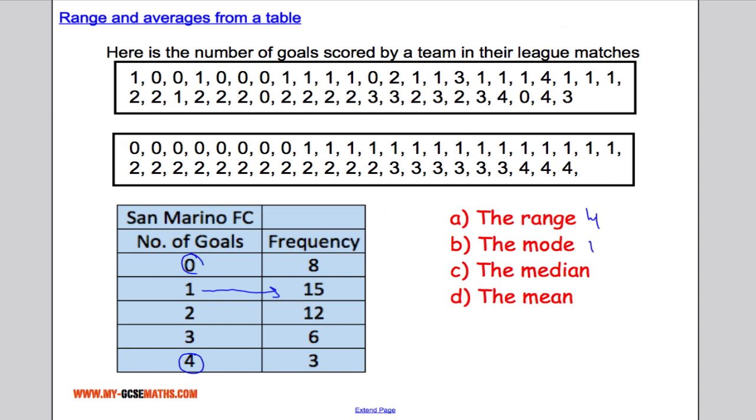The median is going to be the middle data point. Now we know how to do it when it's in a list of data. Let me show you how we do it using a table. The first thing we do is work out how many data points we have in total. And we work that out by adding up all the frequency. So there's 44 pieces of data. That means the median is going to be between the 22nd and 23rd piece of data.